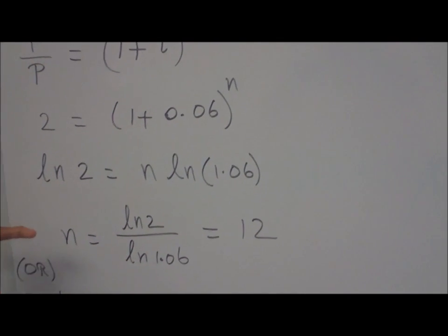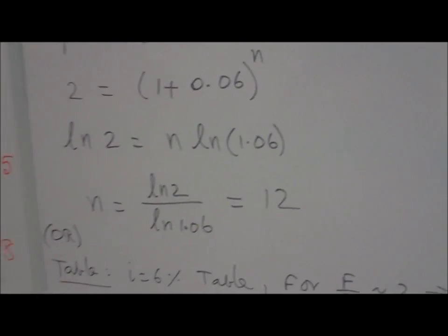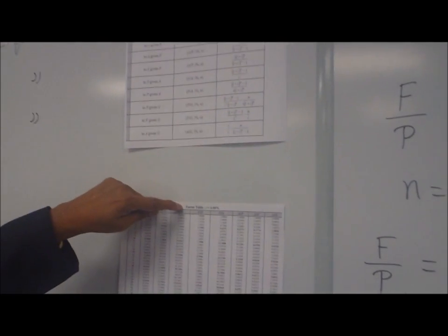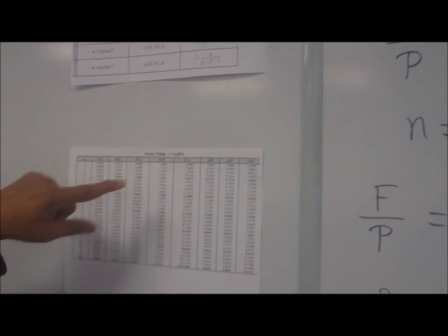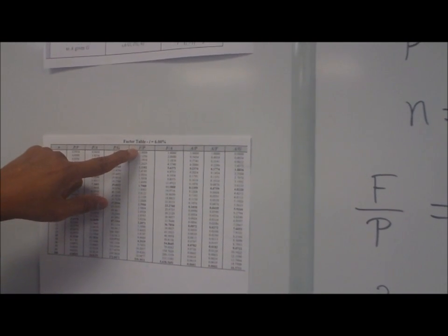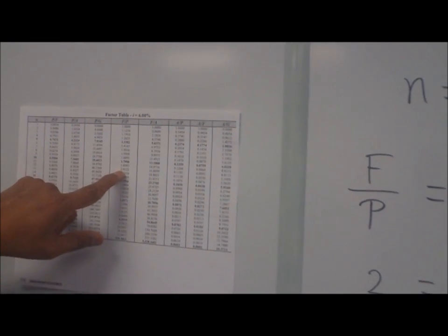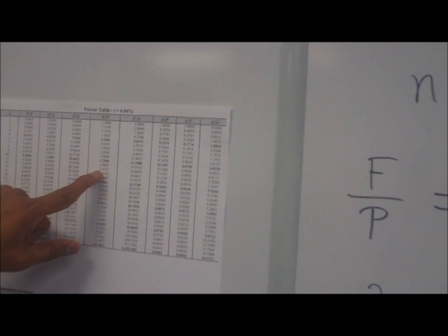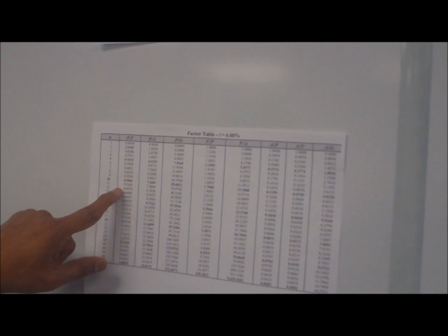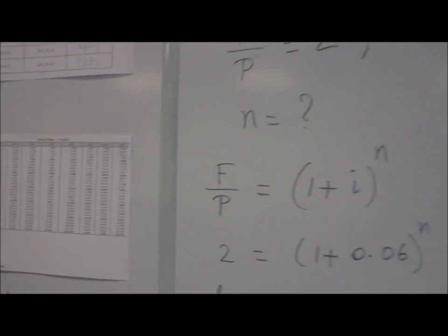We can get the same result using the table for I equal to six percent table. So look for F over P column, where that becomes almost equal to two, approximately equal to two right here. Now go across, you'll see number twelve. So you get the same result quickly using the table.